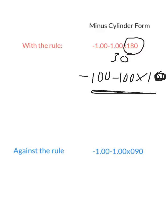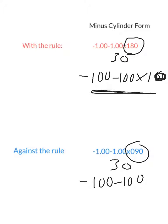Against the rule astigmatism: the axis is within 30 degrees of 90. Another example would be minus 1, minus 1 at axis 100. Here's another example of against the rule astigmatism.